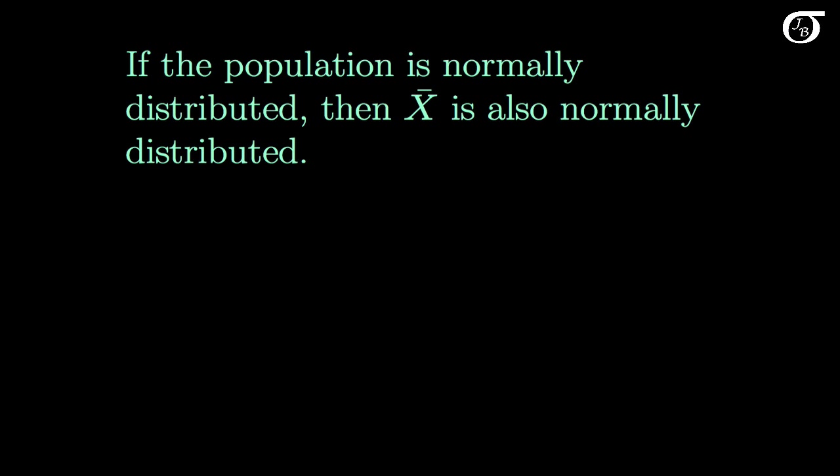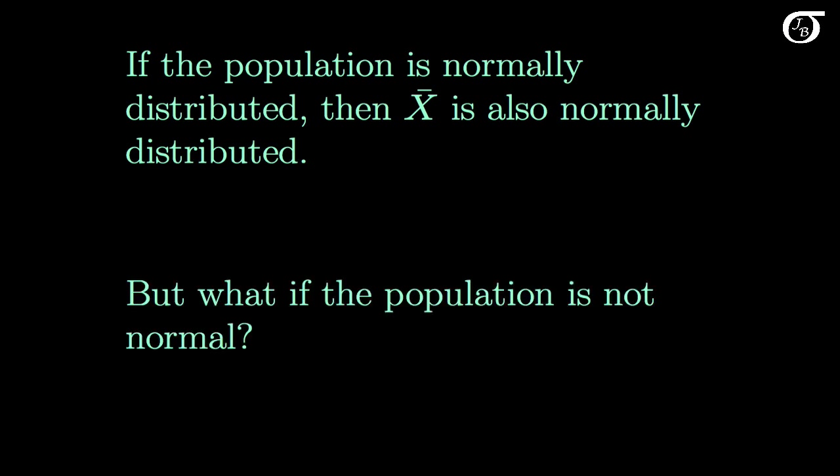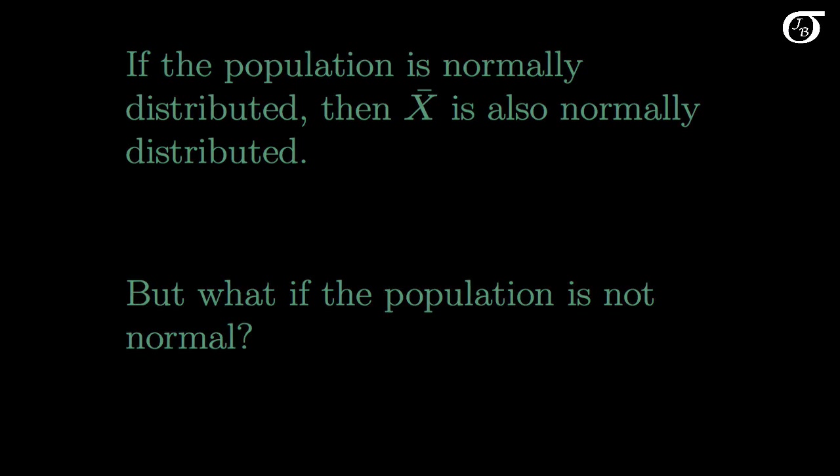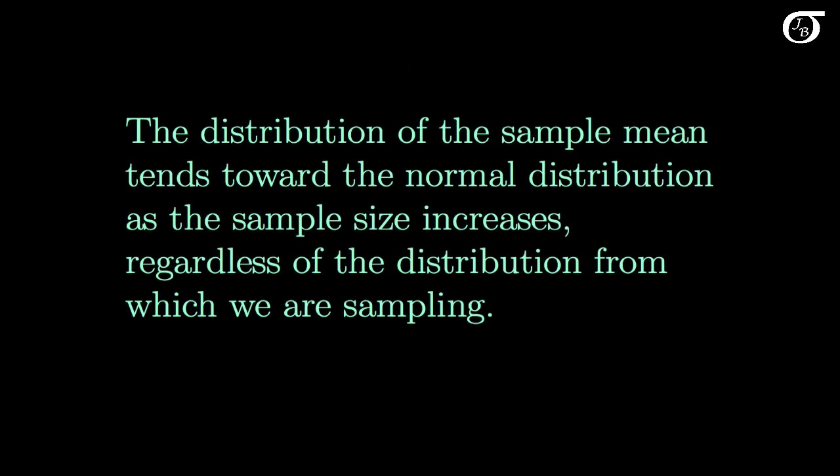As previously discussed, if the population is normally distributed, then the sample mean X bar is also normally distributed. But what if the population is not normal? Well, the central limit theorem addresses this question. The distribution of the sample mean tends toward the normal distribution as the sample size increases, regardless of the distribution from which we are sampling.